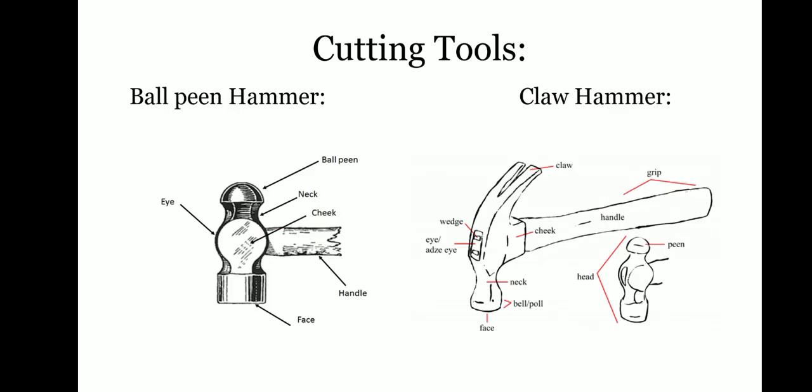Moving on to the next type of cutting tools: the hammers. Hammers are classified according to their shape and weight. There are different types of hammers: straight peen hammer, ball peen hammer, cross peen hammer, claw hammers, and sledge hammers. The one we are seeing on the screen is the ball peen hammer.